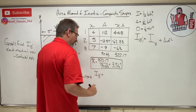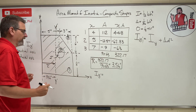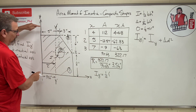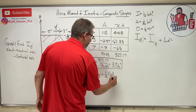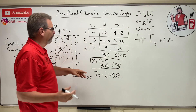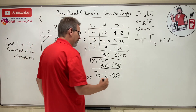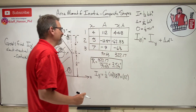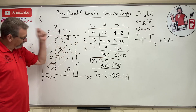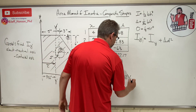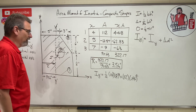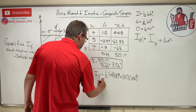So I_y-prime has three parts. Piece number one — the rectangle: (1/12)·b·h³ where the base is now 14 (going horizontally) and the height is 8, plus the area 112 times d². The centroid of the rectangle was at 4 but x-bar is 3.56, so d = 4 − 3.56 = 0.44 inches, squared.